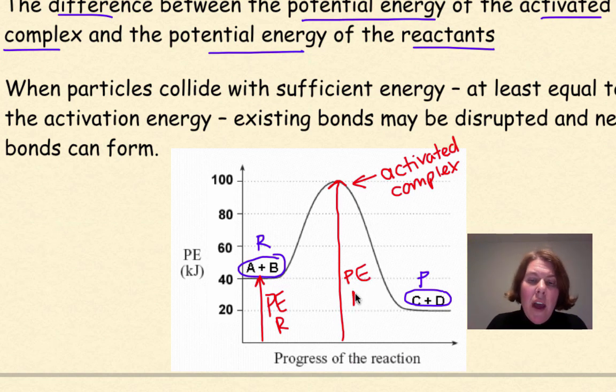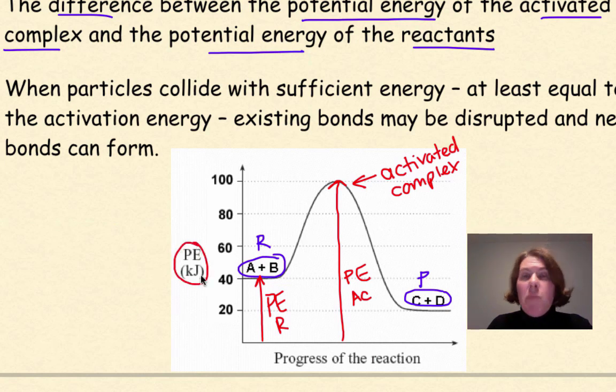So this is the potential energy, a measurement, a potential energy of the activated complex, because we can see over here on our y-axis that this is measuring potential energy in kilojoules. And over on the x-axis, this is the progress of the reaction right here.